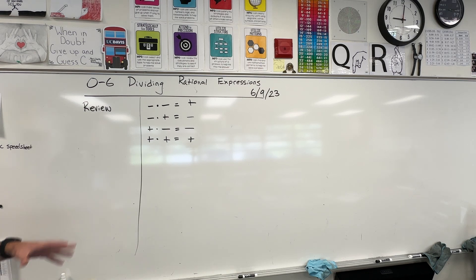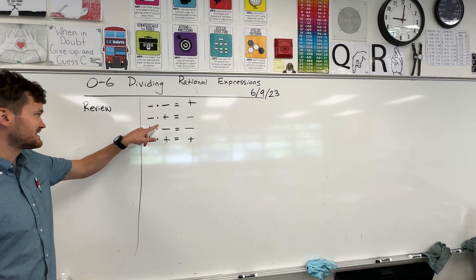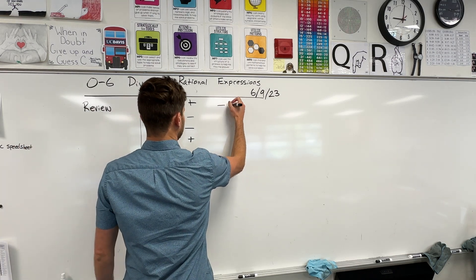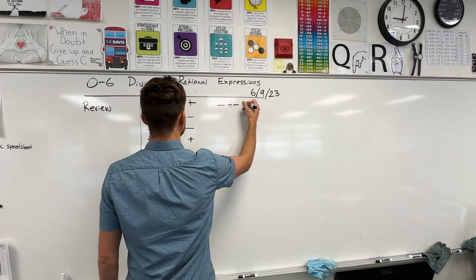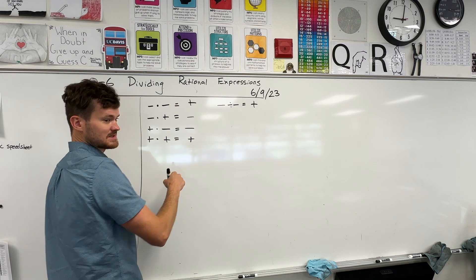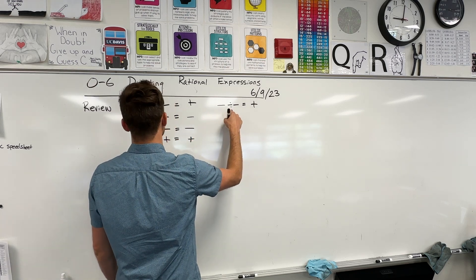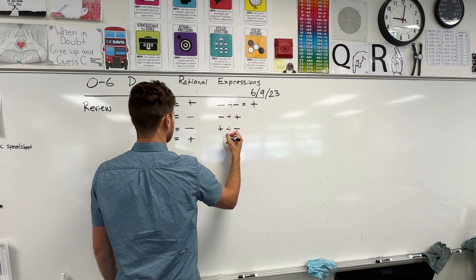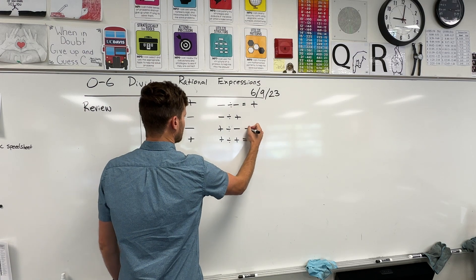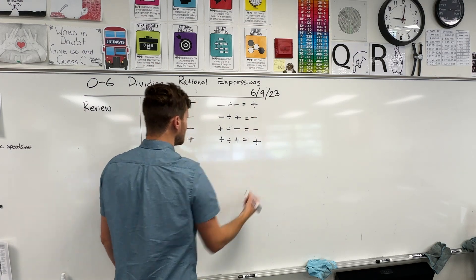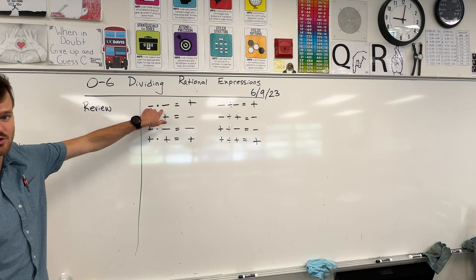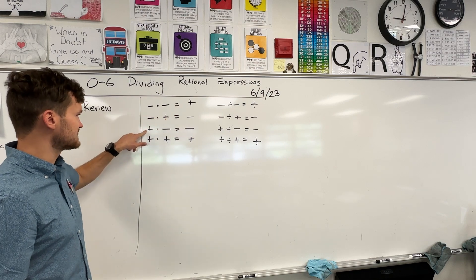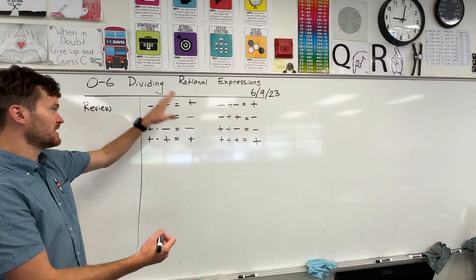Zane, positive times negative? Positive. Ooh, careful. Negative. Yeah. When you have one of each, it's always going to be a negative. Shane, positive times positive? It is indeed a positive. These same rules work with division.